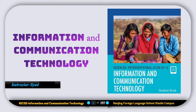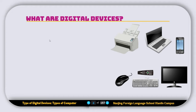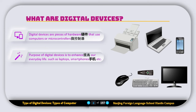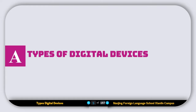Hello everyone, my name is Syed and today we are going to start IGCSE ICT — Information and Communication Technology. This is lesson one, and in this lesson we'll discuss different types of digital devices, different features of those digital devices, and how they work. Digital devices are pieces of hardware that use computers or microcontrollers. The purpose of digital devices is to enhance our everyday life — for example, laptops, phones, printers, etc. These devices work together to give us things we need anywhere or anytime.